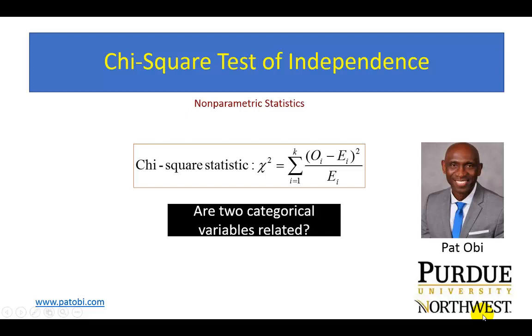Hello, this video shows a working example of chi-square test of independence. This type of nonparametric test answers the question: are two categorical variables related or are they independent?